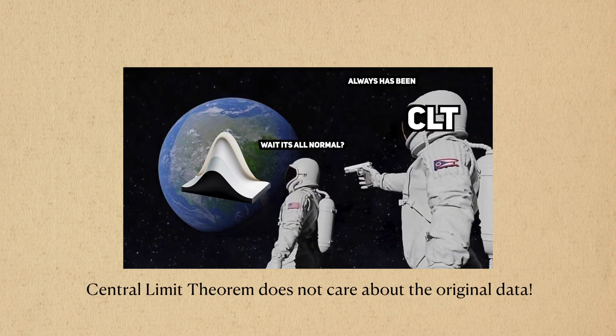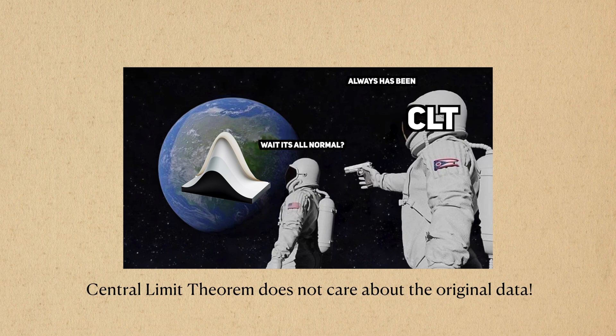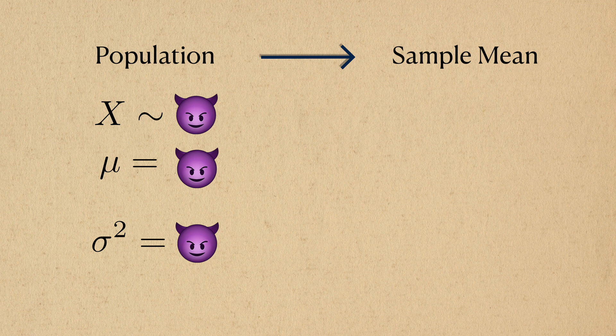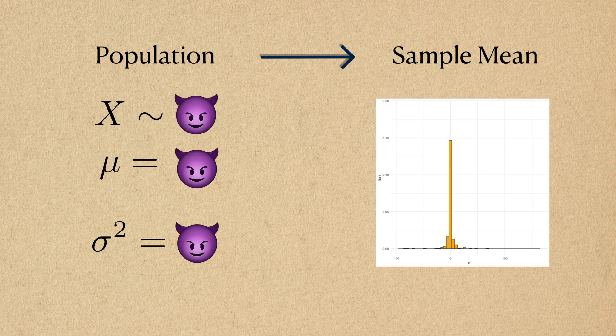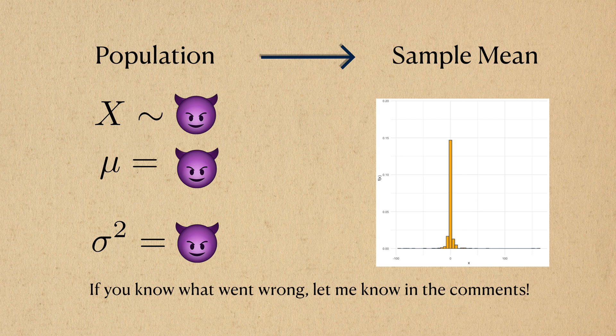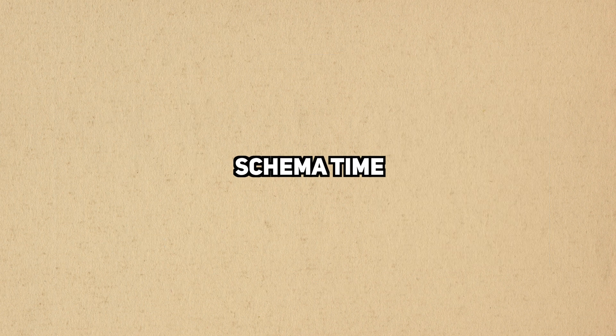Central limit theorem does not care about the law of the data itself. As a final example, I'll generate data from an unknown, but devious distribution. Let's see what happens here when we watch the distribution evolve. Something goes wrong here and we don't get the nice convergence to the normal. If you have an idea why this happens and what distribution I'm simulating from, let me know in the comments. If you'd like to work with this code yourself, I've put a GitHub link in the description.